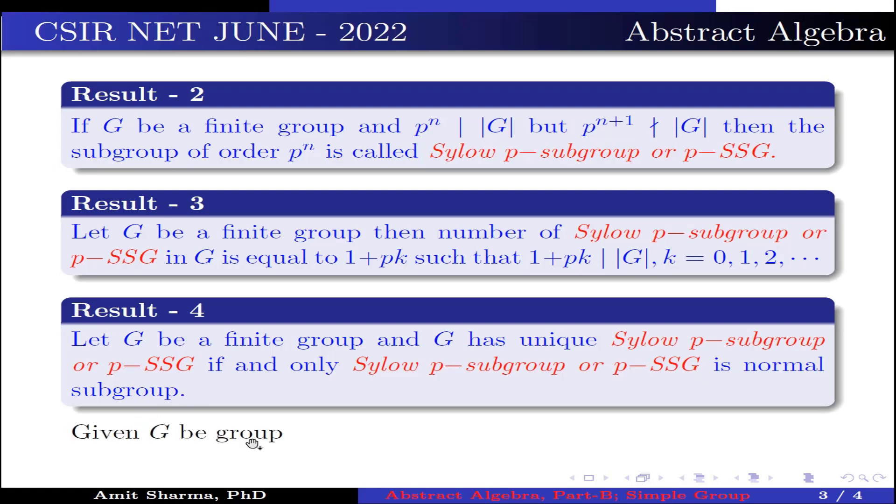Now, given G be a group and order of G is 168, which is further written as 2 to the power 3 times 3 times 7. Since 7 divides order of G which is 168, but 7 square does not divide order of G, this implies G has 7-SSG of order 7.